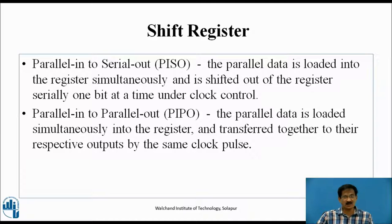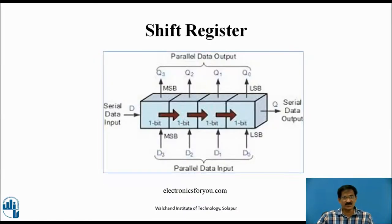Parallel In Parallel Out is the most high-speed register, because with a single clock pulse, data is loaded simultaneously into all the flip-flops and can be retrieved at the output side, requiring only a single clock pulse. So PIPO is one of the most high-speed registers as compared to SISO, SIPO, and PISO.